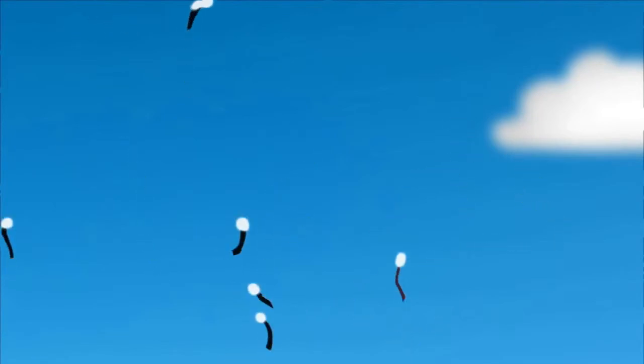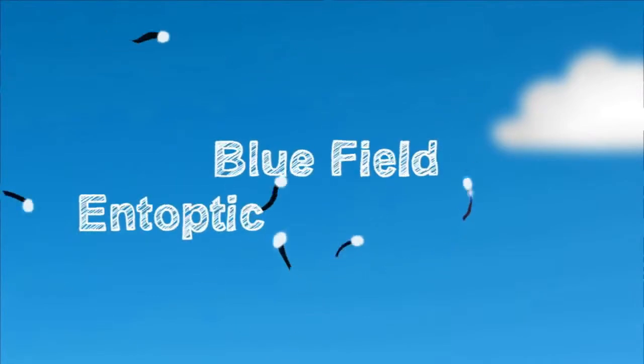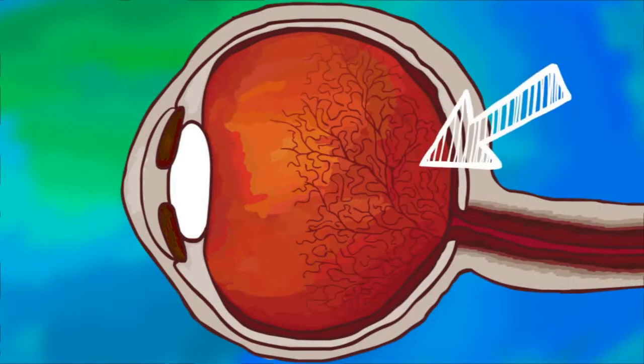There is another visual phenomenon that looks similar to floaters but is in fact unrelated. If you've seen tiny dots of light darting about when looking at a bright blue sky, you've experienced what is known as the blue field entoptic phenomenon. In some ways, this is the opposite of seeing floaters. Here you're not seeing shadows, but little moving windows letting light through to your retina.